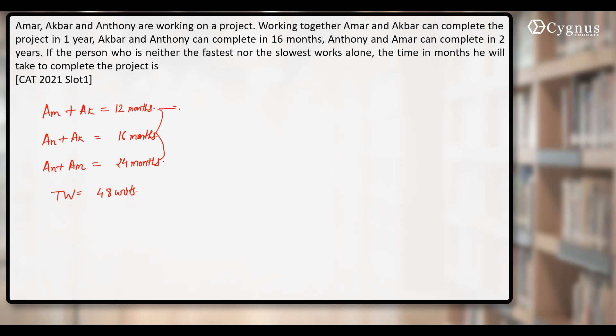So this pair will do how many units per month? 48 by 12, that is 4 units. This pair will do 48 by 16, that is 3 units per month. And this pair will do 48 by 24, that is 2 units per month.